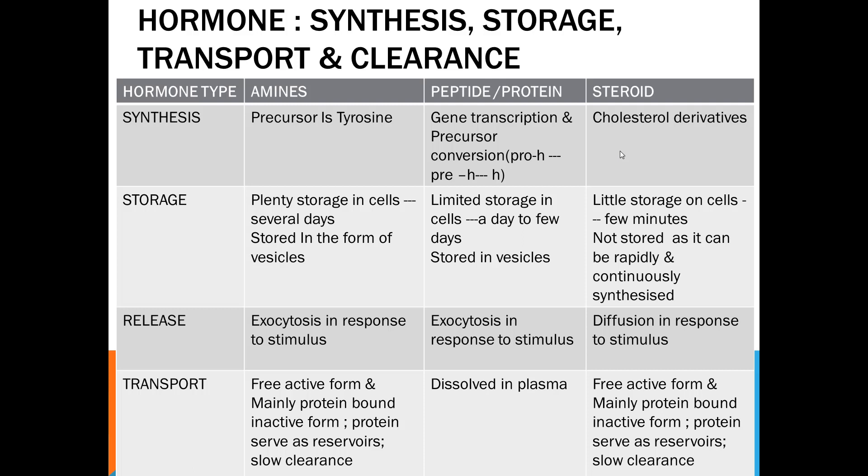T3 and T4 transport in the blood occurs in two forms: free form and protein bound form. Free form is the active form, about 1%. Protein bound form is 99%, it is inactive form. If it is bound to protein, then its clearance will also be slow. Renal clearance will not occur because kidneys—glomerular filtration of proteins does not occur. So clearance is slow and this protein bound form acts as reservoir.